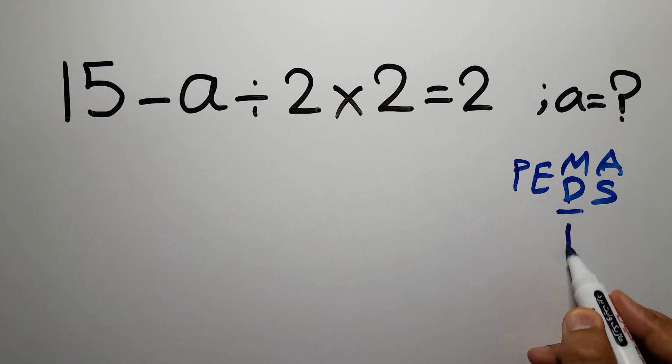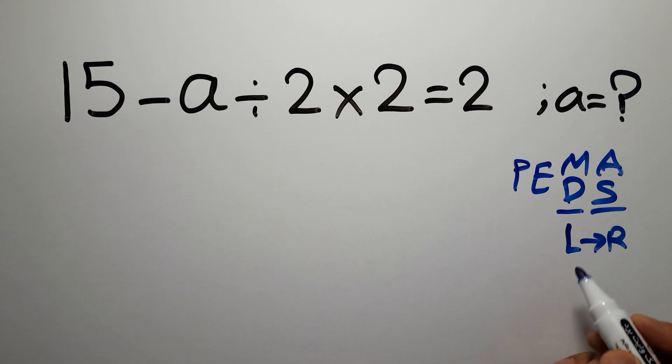Remember that multiplication and division have equal priority and we have to work from left to right, and the same applies to addition and subtraction.